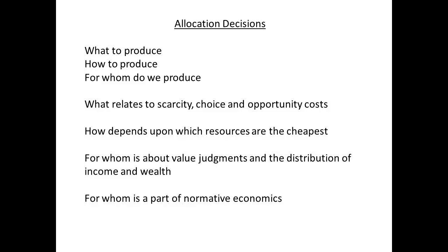Who we produce for is a part of normative economics. It brings into play attitudes of fairness and equality. The aim is to maximize social welfare. We have only maximized social welfare if the income distribution at that point on the community indifference curve was the socially desirable one.